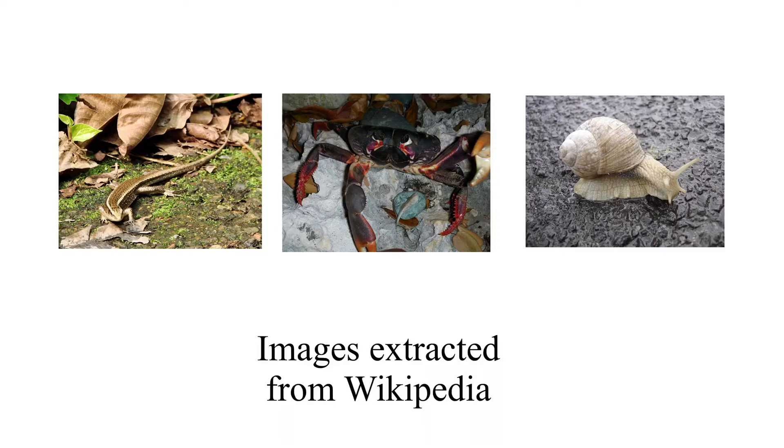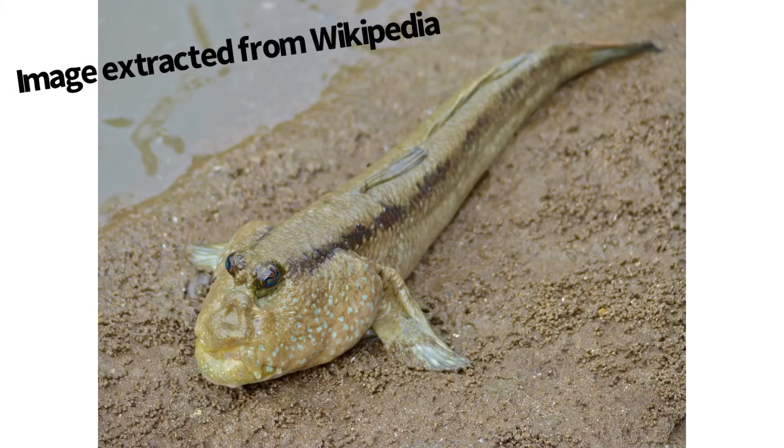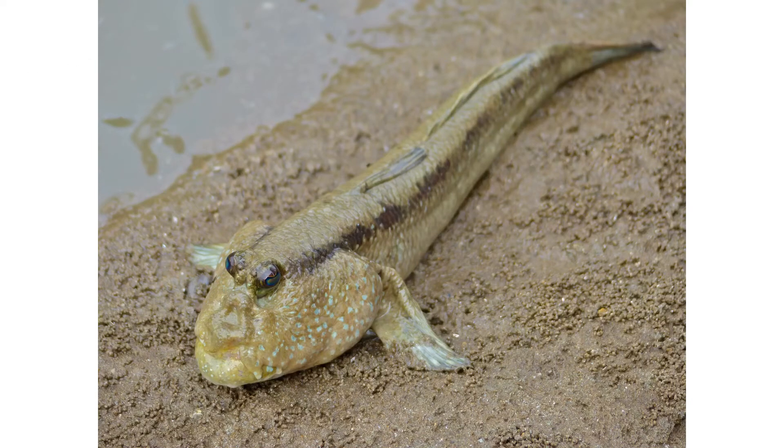The best examples being the ancient ancestors of arthropods and vertebrates that came onto land millions of years ago, but also including more recent examples like mudskippers and terrestrial sea slugs.